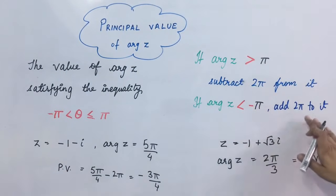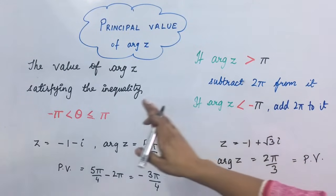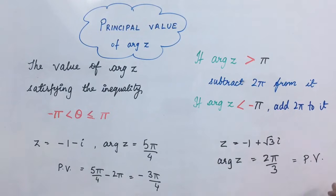We will apply these cases only when argument z's value will come beyond this range, not within it. If it is inside, then that value itself will be the principal value of argument z. Thank you.